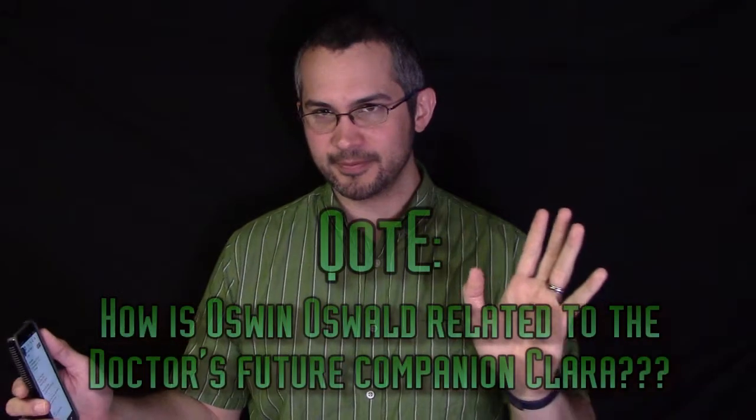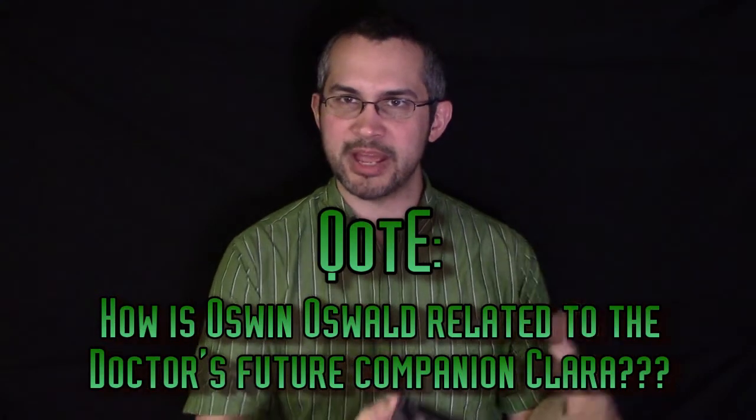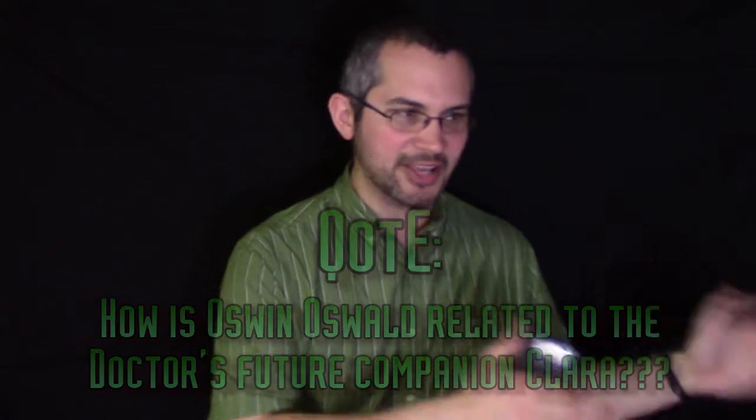My question of the episode is, how is Oswin related to the future companion Clara? I know that it kind of ruins it, the fact that I'm not seeing this as it's released, because we don't know Clara is a person. We don't know Clara is going to be a future companion, or wouldn't have at that point. But knowing that, I'm really curious as to how they're related, or maybe if they're even the same person in some form. I mean, they're played by the same person. I can't remember the actress's name offhand, but they're played by the same person, so obviously there has to be some sort of relation there. Especially considering what happened with Martha and her cousin from the previous season that appeared in that one episode and died. But yeah, I'm just really curious about that. But my personal thought is maybe they are related in some form, or they are literally the same person. Who knows? You all may know, but I don't at this point.